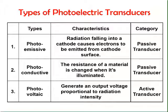The third type is the photovoltaic type of photoelectric transducer, which generates an EMF proportional to the radiation intensity. Of these three types, photoemissive and photoconductive type transducers are named as passive type transducers because they require an external power supply, whereas the photovoltaic type transducer is named as active because it induces its own EMF.